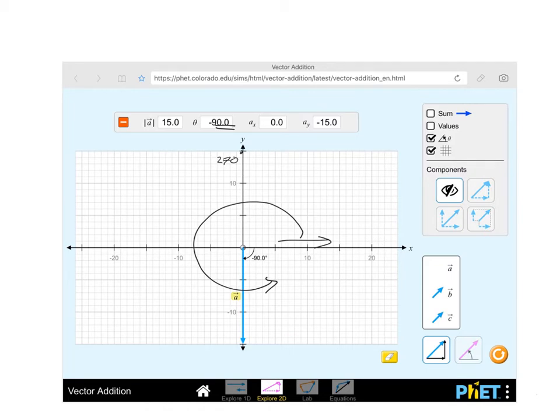The final way that we can specify vectors is using the navigator method. So if I erase this again, the navigator method is something that confuses a lot of students, but I'll try to explain it in a way that makes sense to you.